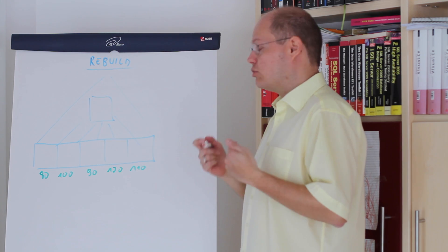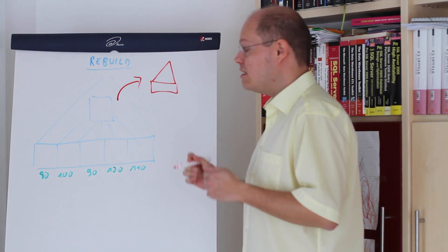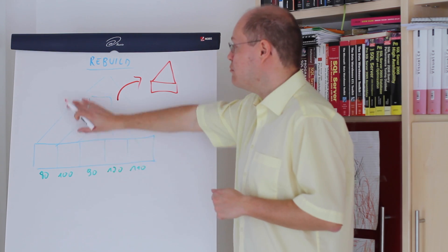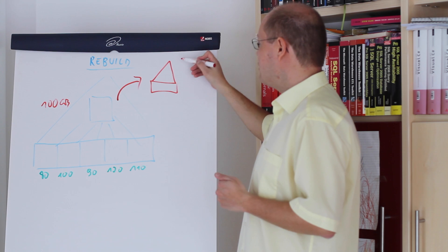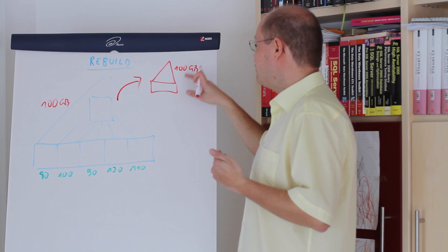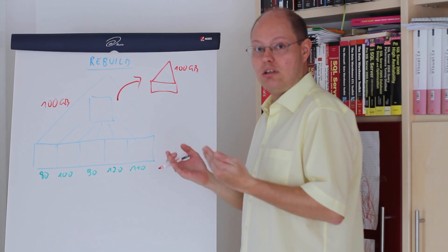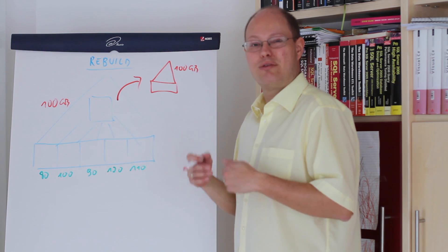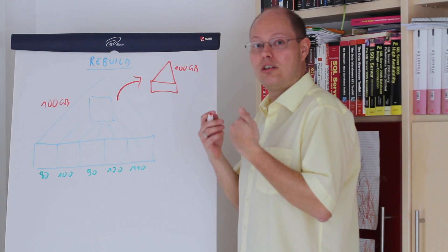When you run an index rebuild operation, SQL Server generates a complete fresh new index in your data file and just deallocates the old one. This means when your original index is 100 gigabytes large, your new index is also 100 gigabytes large, so your data file needs at least 100 additional gigabytes of free space. In addition, you also generate 100 gigabytes of transaction log records because an index rebuild operation is just one large transaction.